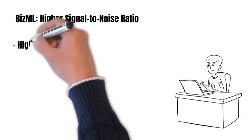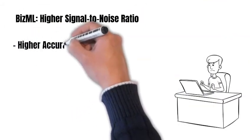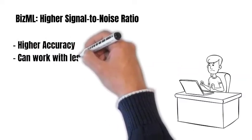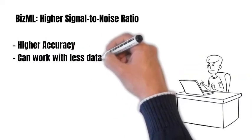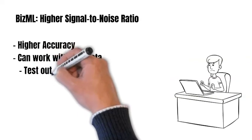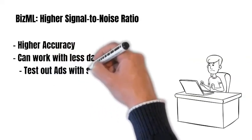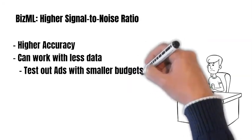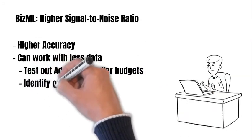It improves accuracy. It can also help you work with less data. For example, you can test ads at $500 or $1,000 a month and also identify potential opportunities and problems very early on.